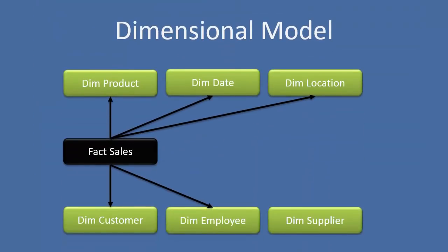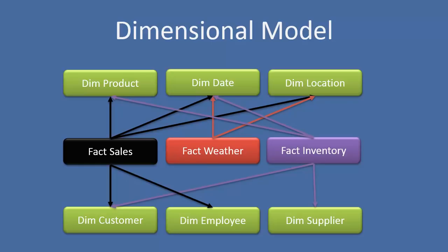Whenever you have a bus matrix, you can see how the reuse of dimensions becomes very important. Here we have a sales fact table related to several different dimensions. We add another fact table and we're now reusing our date and location dimensions. We add a third fact table where we're reusing several different dimensions once again. It's this reuse of conformed dimensions that actually forms our bus architecture, enabling us to create an integrated data warehouse through the combination of individual data marts.